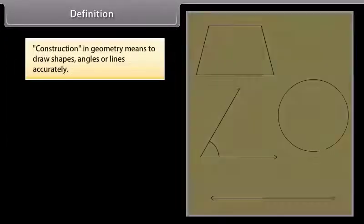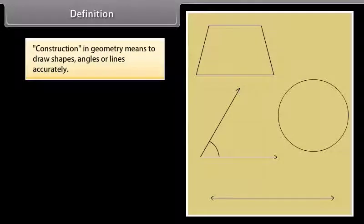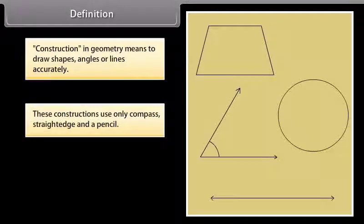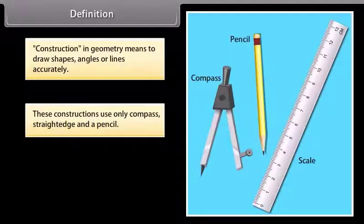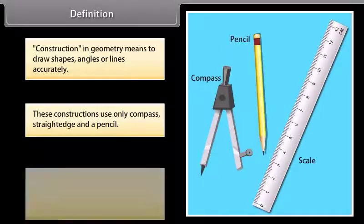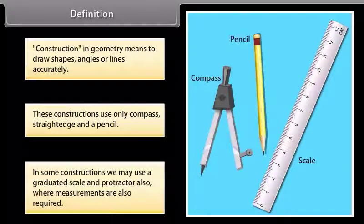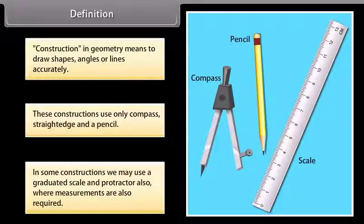Construction in geometry means to draw shapes, angles, or lines accurately. These constructions use only a compass, straight edge (that is, ruler), and a pencil. In some constructions, we may also use a graduated scale and protractor where measurements are also required.